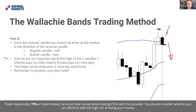Flip asks whether a candle six bars previous was also a signal. No, because we're looking specifically at the upper band - just when price gets to the edges of the bands. The 20-period moving average is in the middle, with the lower band at the bottom and the upper band at the top.